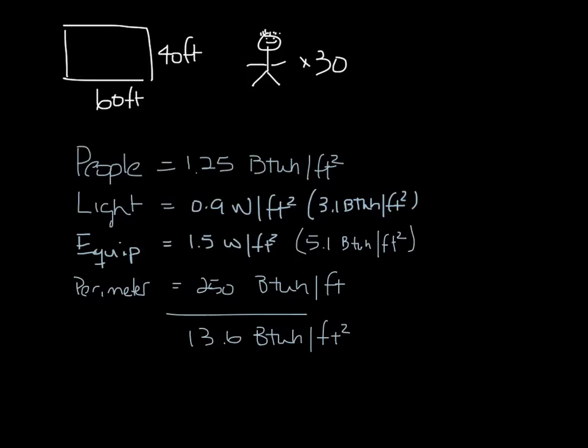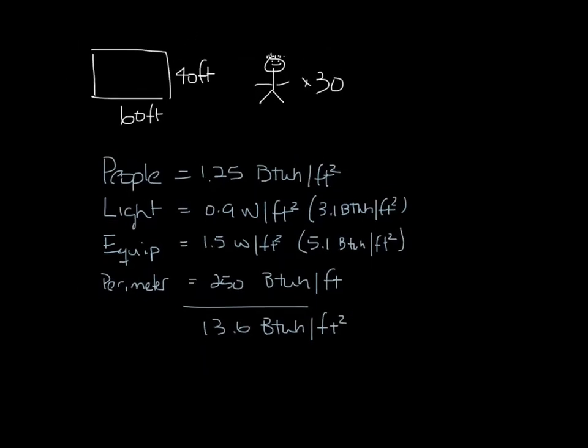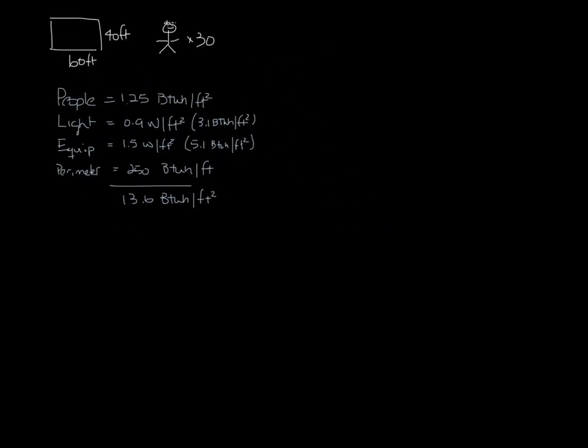So now let's calculate the sensible and latent loads. The latent load is from the 30 people, and per ASHRAE, there are 200 BTU per person, which gives us 6,000 BTU of latent load.